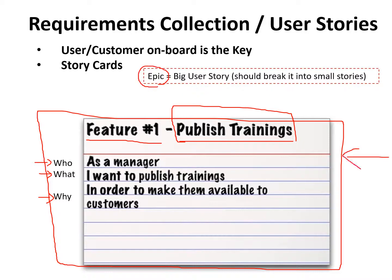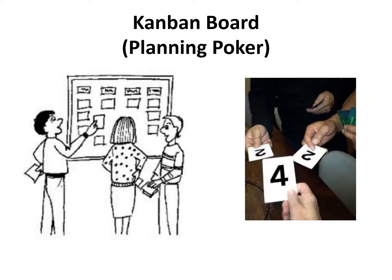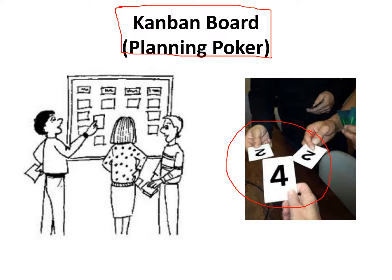At this point we have several user stories and now it's time to know how much time it will take to develop, what the priority is, and what the complexity is. We need to have a Kanban board where we will play this poker. We need cards with numbers written on them, usually in the Fibonacci series: one, two, and so on.